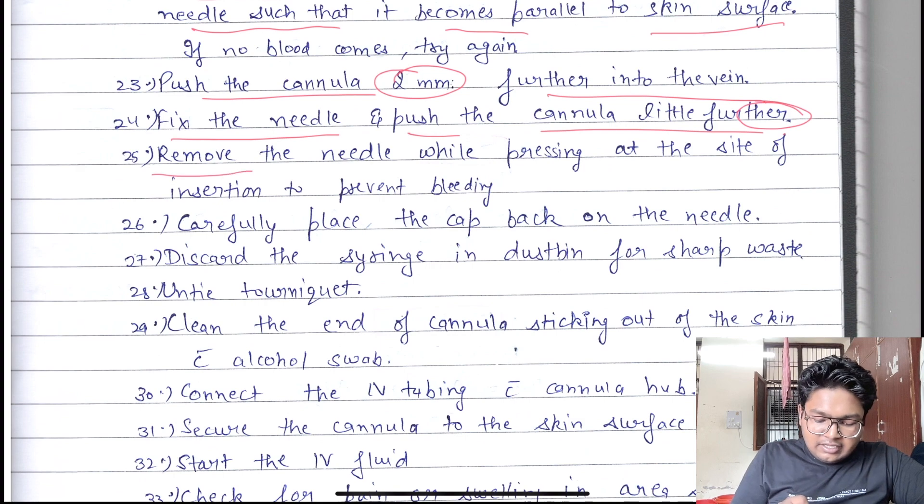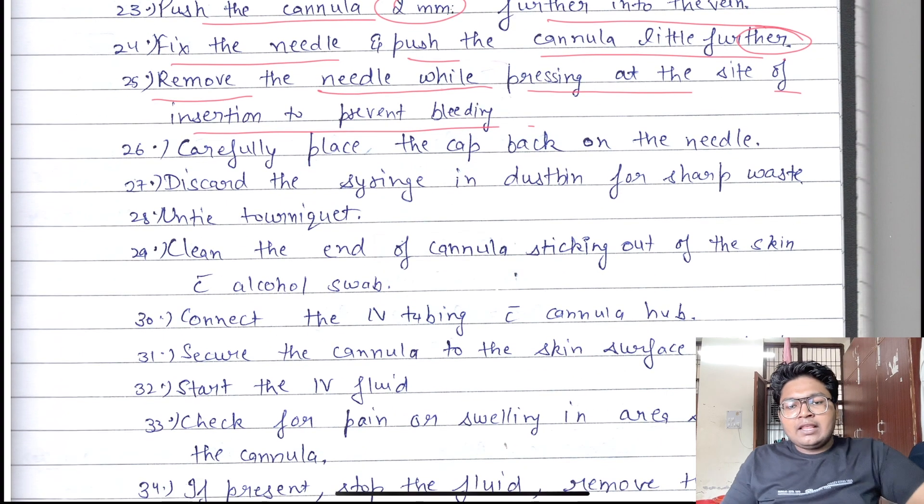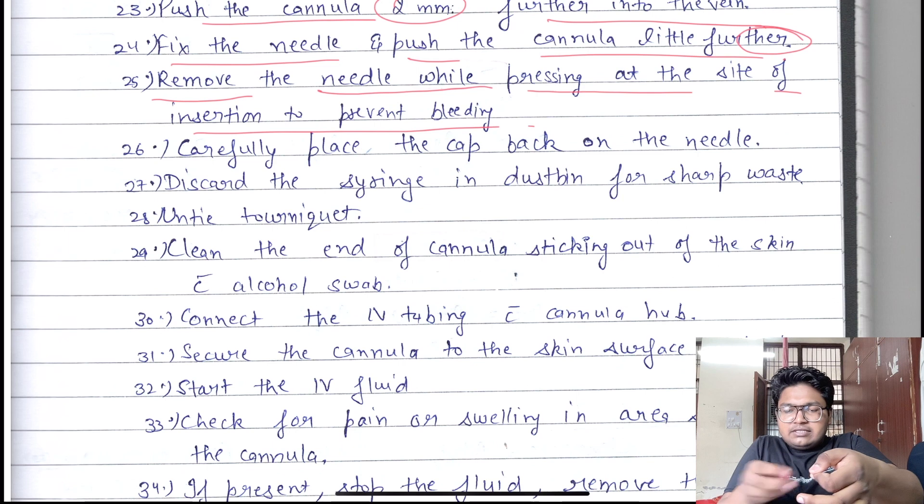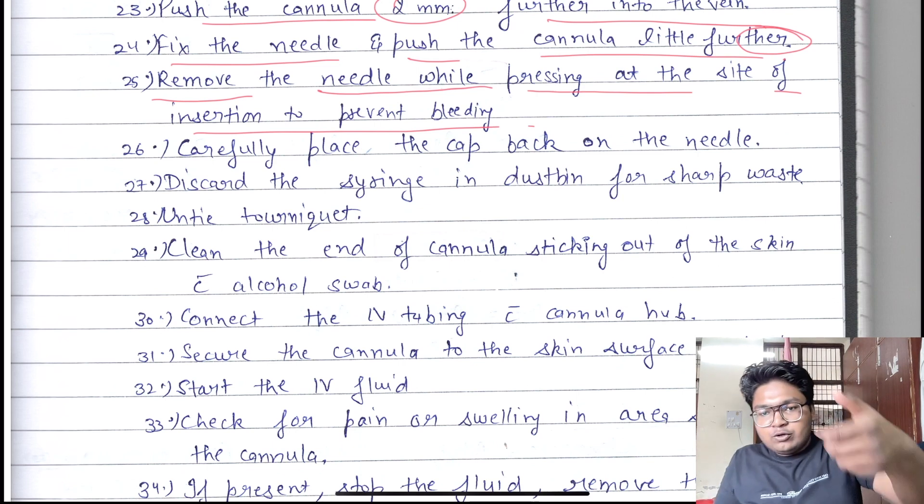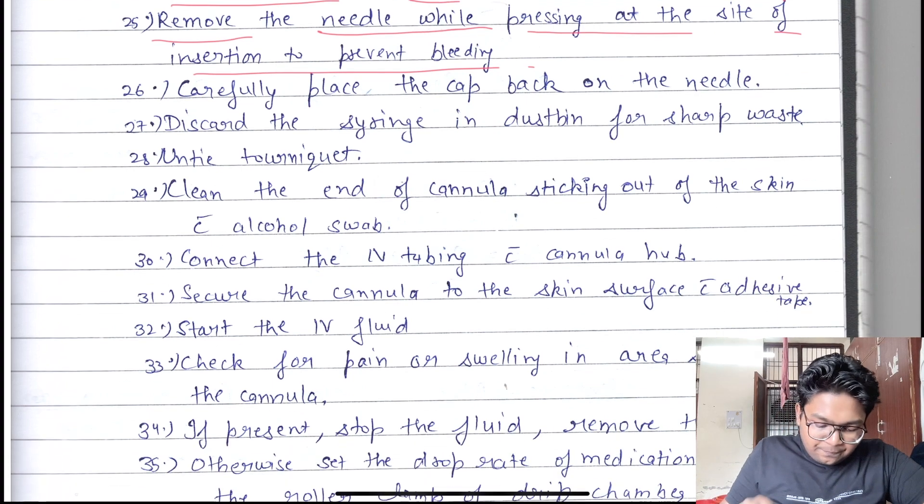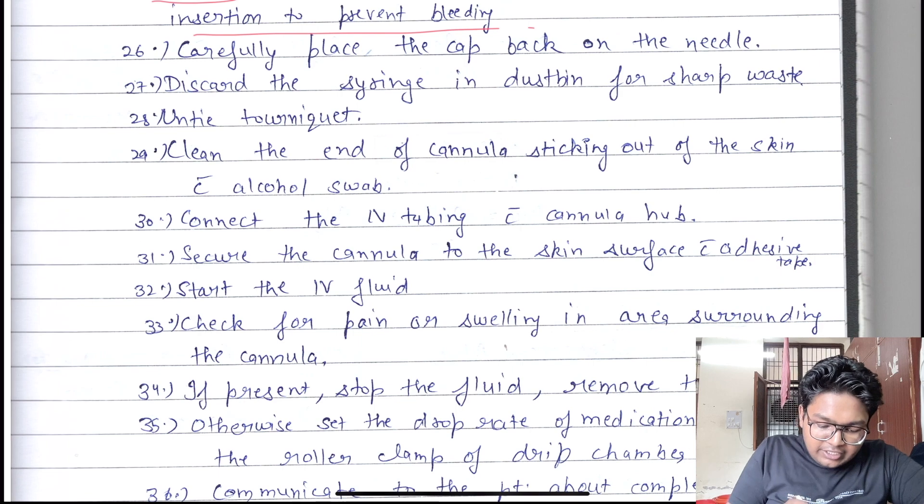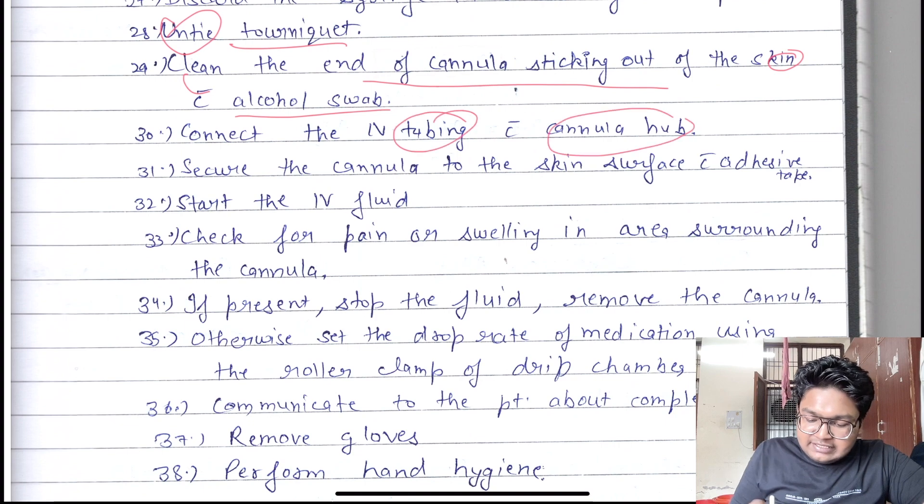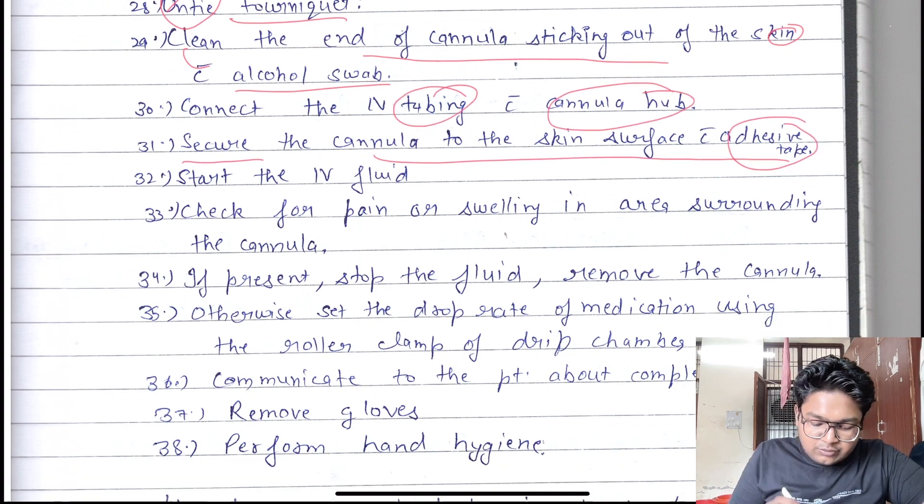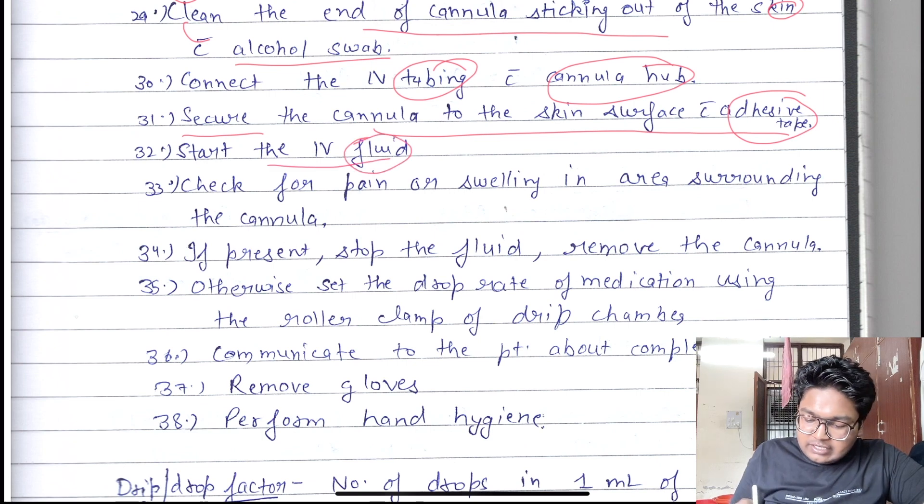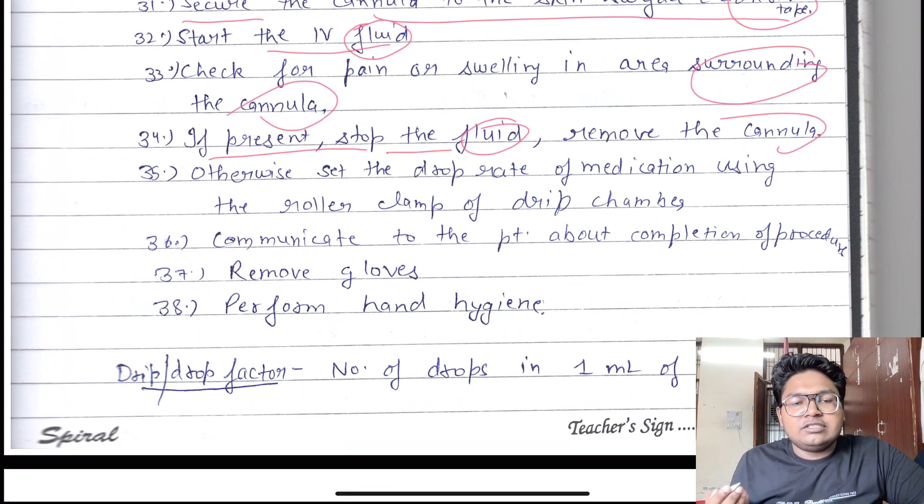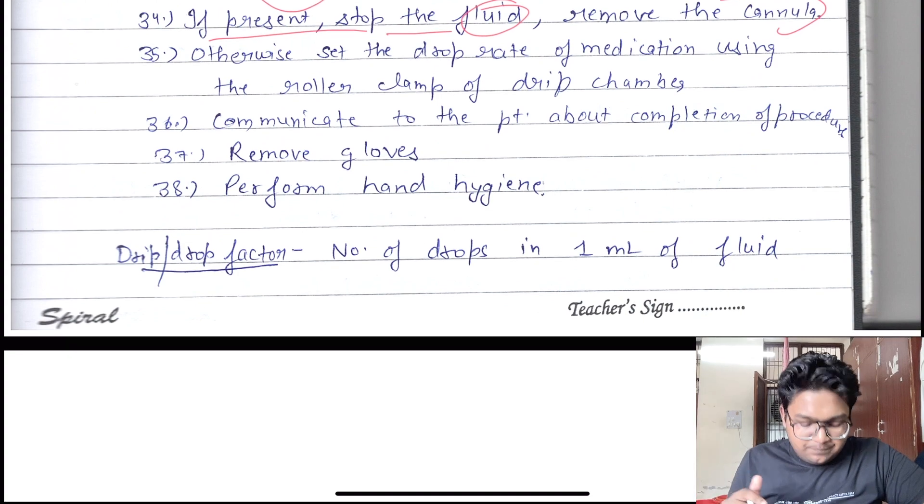Hold the cannula as you would hold a syringe. When blood appears in the cannula, lower the angle of the needle so it will be parallel to the skin surface. Push the cannula 2mm further into the vein, fix the needle, and push the cannula a little further. Remove the needle while pressing at the site of insertion to prevent bleeding. Discard the syringe in the dustbin for sharp waste only. Untie the tourniquet, clean the end of the cannula sticking out from the skin with an alcohol swab. Connect the IV tubing with the cannula hub, secure the cannula to the skin surface with adhesive tape. Start the IV fluid, check for pain or swelling in areas surrounding the cannula. If present, stop the fluid and remove the cannula. Otherwise, set the drop rate according to the medication and physician's notes. Communicate to the patient about the completion of the procedure, remove gloves, and perform hand hygiene.